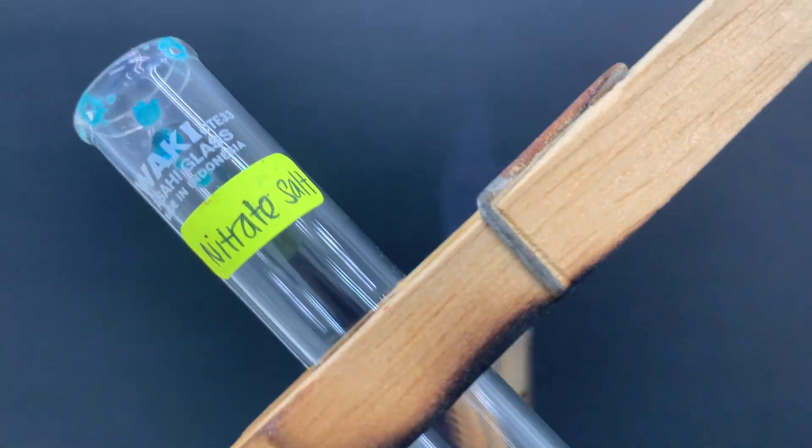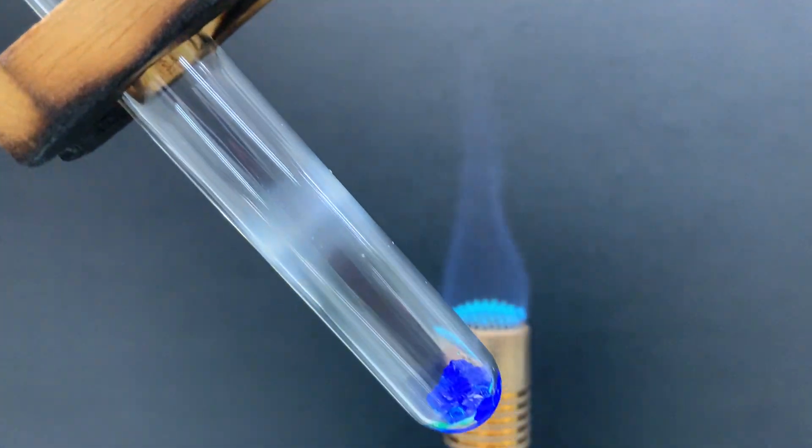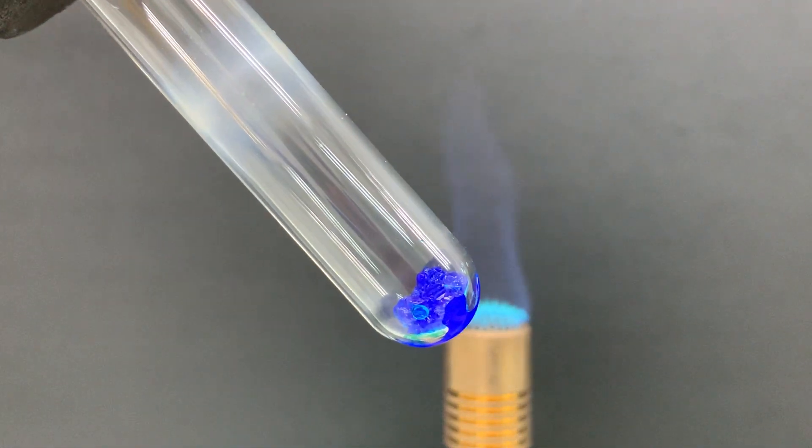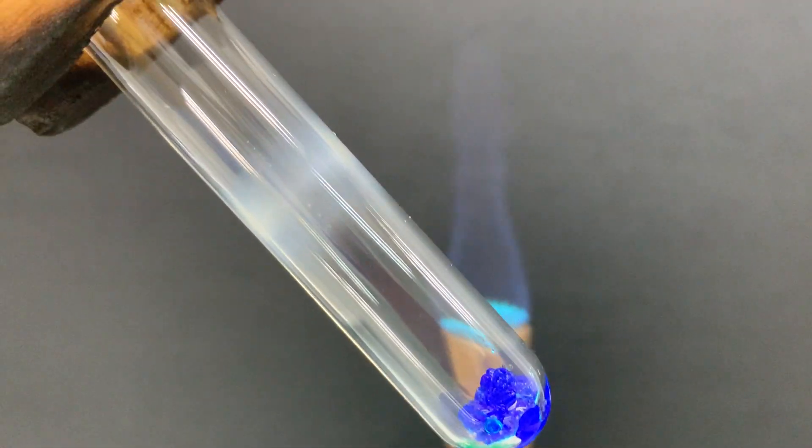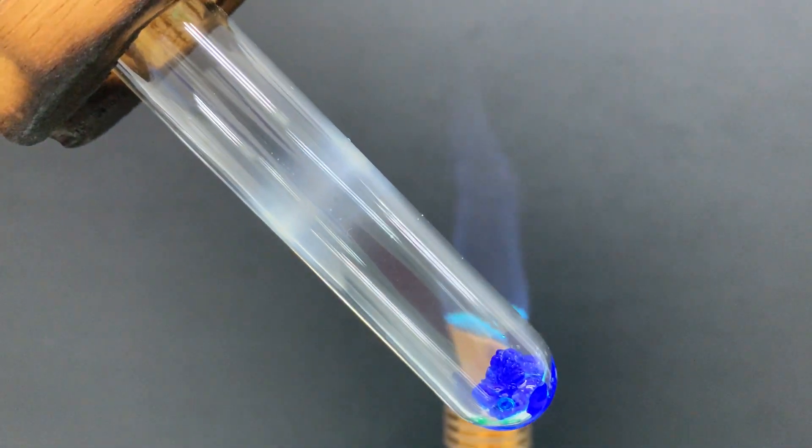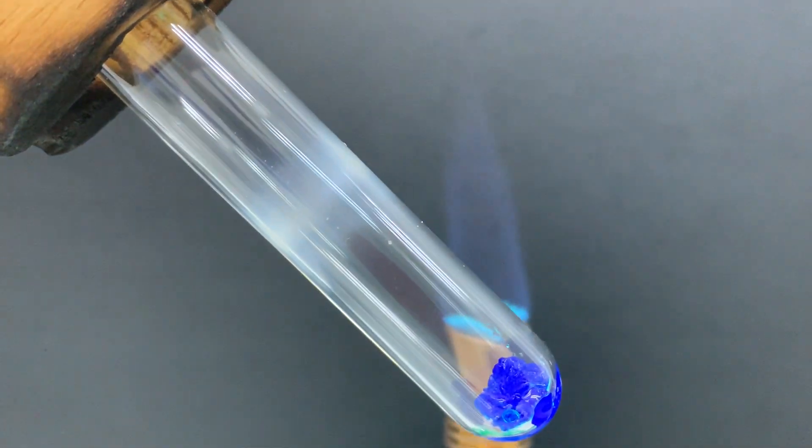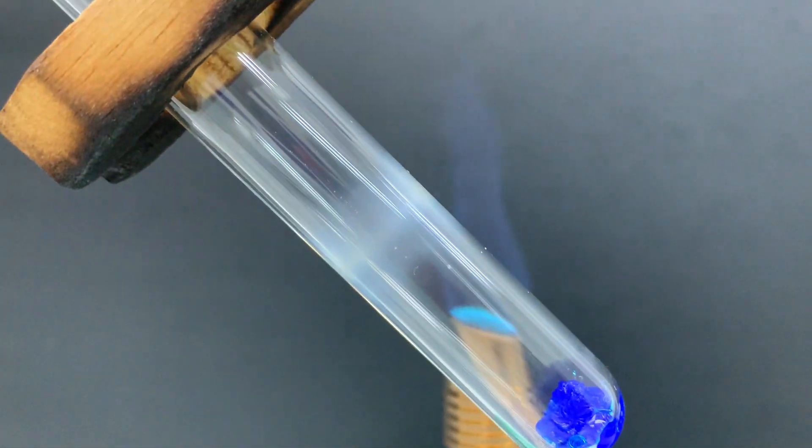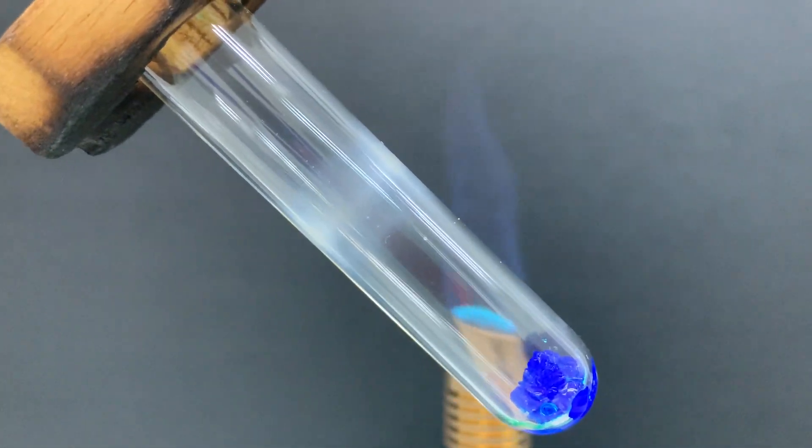This is a nitrate salt and the salt that I use is actually copper nitrate. So if we want to check whether an ionic compound contains nitrate ions or not, or maybe if you are having a metal nitrate, how can you test it?